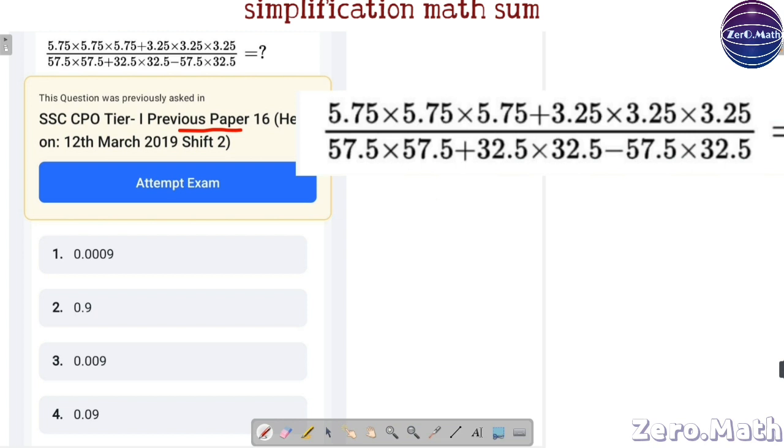In numerator, you have terms like a squared plus b squared or a cubed plus b cubed. In this case, it is a cubed plus b cubed. And in denominator, you have a squared plus b squared minus ab.